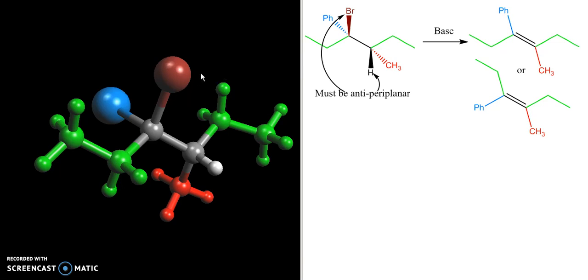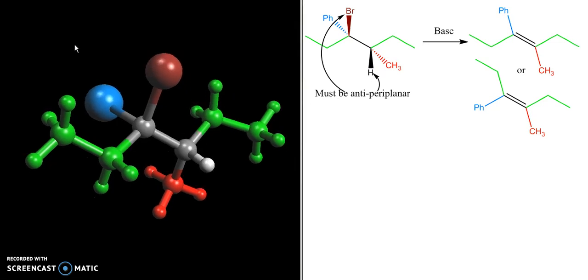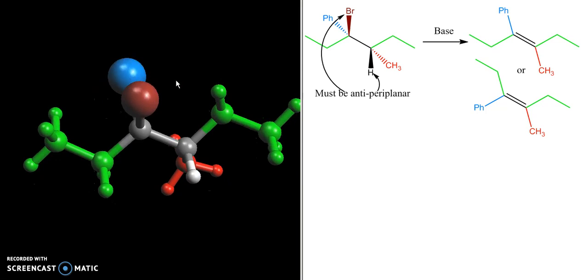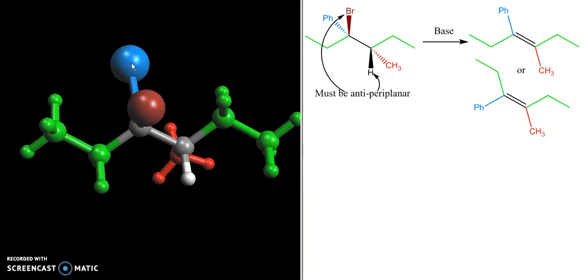You can see that I've color coded all of my atoms. So I've got my bromine in the brownish color, my methyl group is red, my two ethyl groups along this carbon chain are in this lime green color. And what I'm going to do is take this, and this is how it is right now with the bromine coming out towards me. The phenyl group is represented by this blue sphere right here.